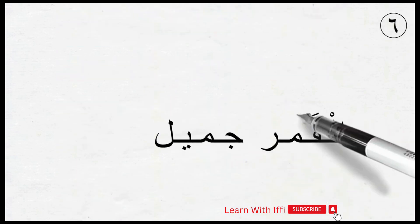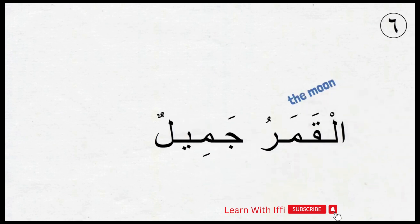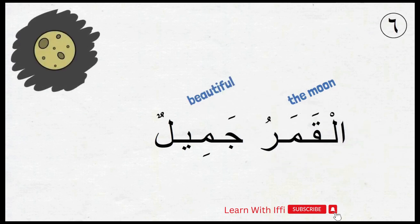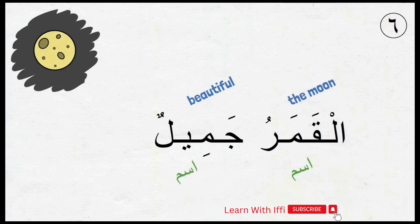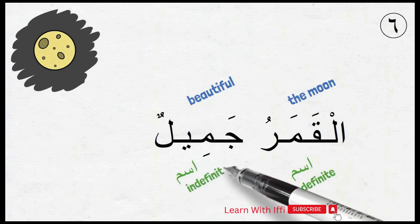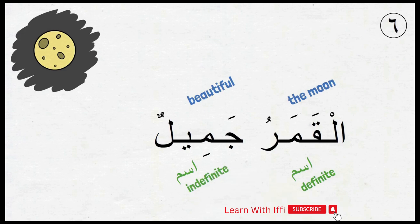Next sentence: أَلْقَمَرُ جَمِيلٌ. Here, أَلْقَمَرُ means 'the moon' and جَمِيلٌ means 'beautiful,' so the sentence is: the moon is beautiful. Both of these words are ism because they carry meanings on their own. أَلْقَمَرُ is definite ism because everybody knows what moon is being talked about, while جَمِيلٌ is indefinite. Do you see the pattern in all these sentences? The first word is coming as definite and the second one indefinite.